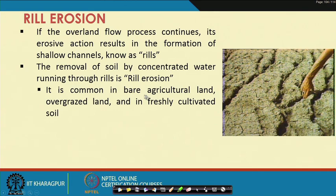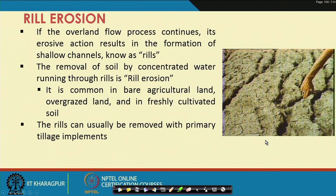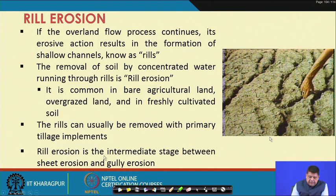Rill erosion is very common in bare agricultural land, overgrazed land, and freshly cultivated land — wherever soil surface is exposed. One advantage is that rills are small enough to be removed with primary tillage implements; simply plowing the land can smooth them out. Rills represent the intermediate stage between sheet erosion and gully erosion, which is the more serious form of erosion.